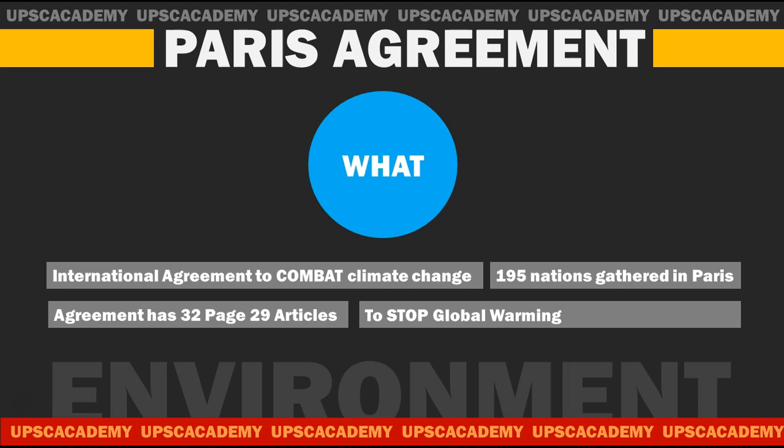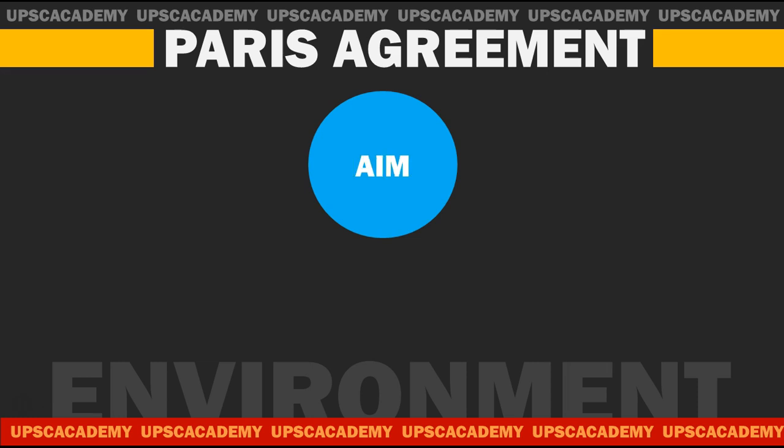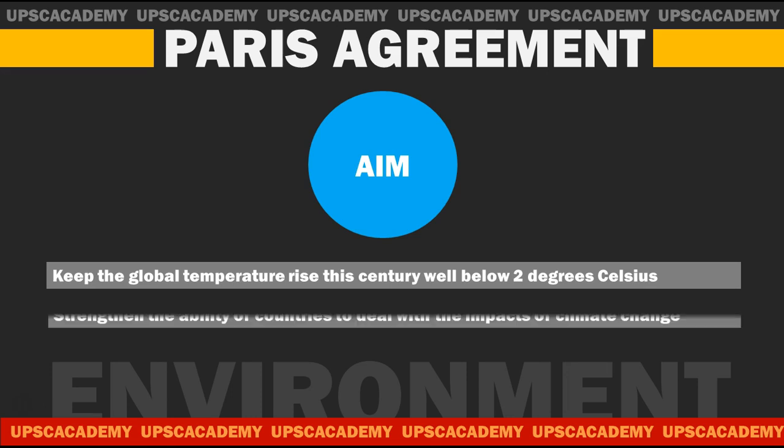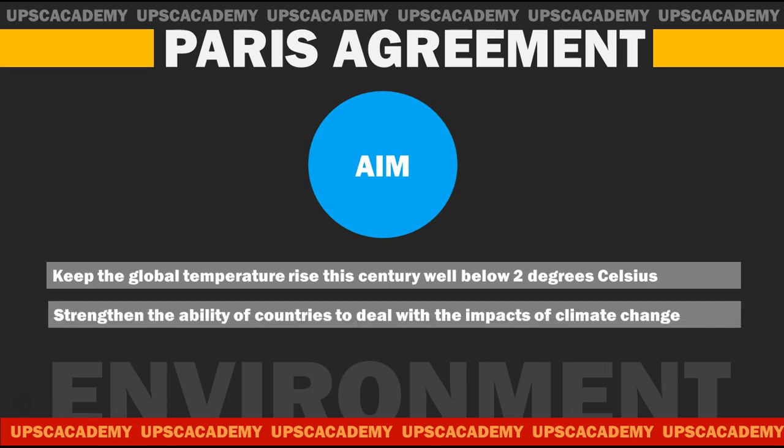The Paris Agreement came out as a 32-page, 29-article document to recognize the historic deal to stop global warming. The aims of the Paris Agreement are: to keep the global temperature rise this century well below 2 degrees Celsius, and to pursue efforts to limit the temperature increase even further to 1.5 degrees Celsius.